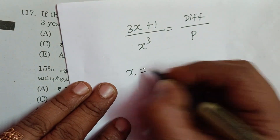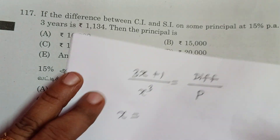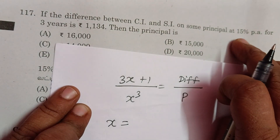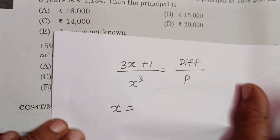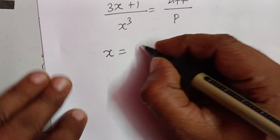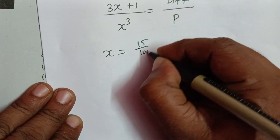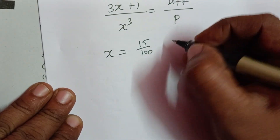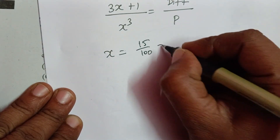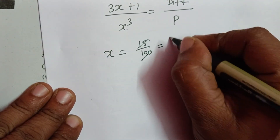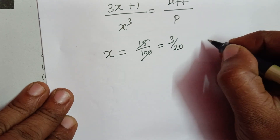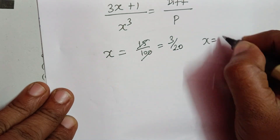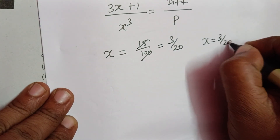What is the rate of interest? We use 15% per annum. So we use 15 divided by 100. If we simplify by cancelling the factor of 5, we get 3 by 20. So x takes the value of 3 by 20.